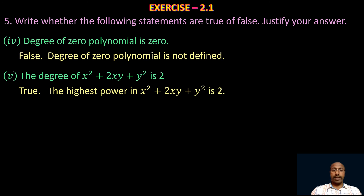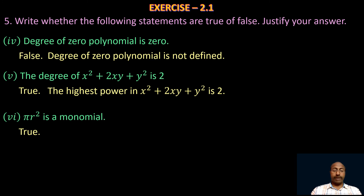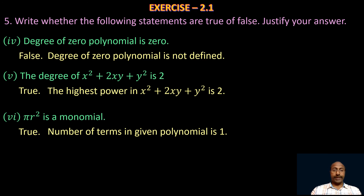The highest power in x² + 2xy + y² is 2, so the degree of the given polynomial is 2 — that statement is true. Also, πr² has only one term, so πr² is a monomial, and that statement is true. The justification is that the number of terms in the given polynomial is 1.